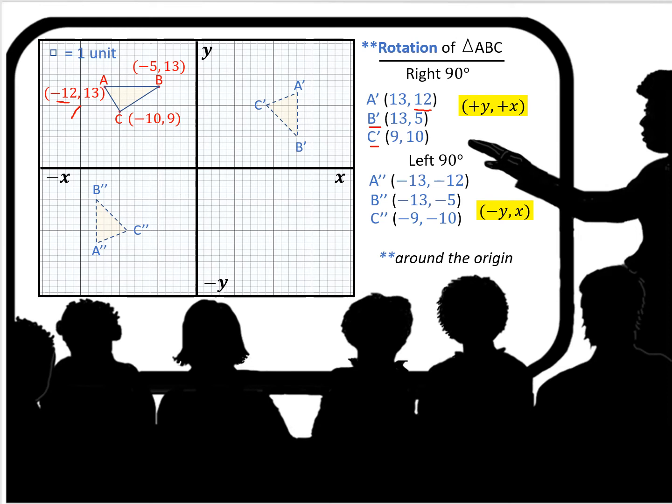If we were to rotate the same triangle ABC left 90 degrees, we're looking at this one here now. Then our coordinates are going to be negative y comma x. So again, A was negative 12, 13, and we're going to rotate it left 90 degrees. So in this case, our A coordinates are now going to be negative 13 and negative 12. Our B coordinate was negative 5, 13. Right here. So now B is going to be negative 13, negative 5.